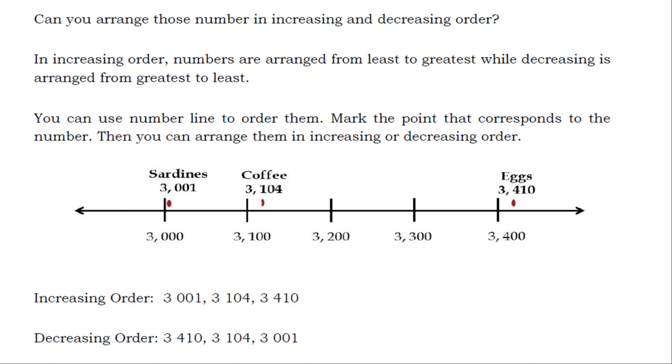Then you can arrange them in increasing or decreasing order. 3,001 sardines, 3,104 coffee, 3,410 eggs.